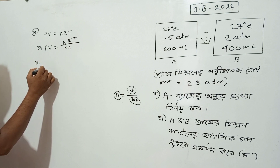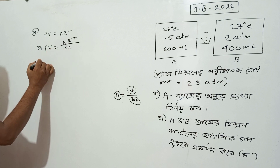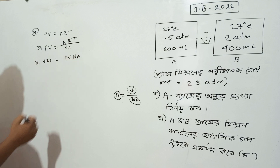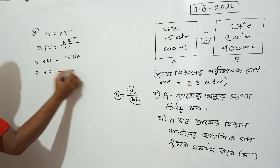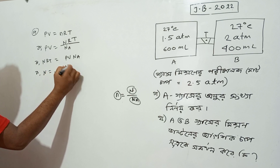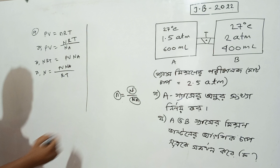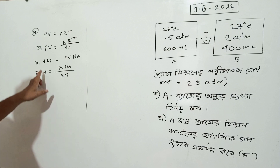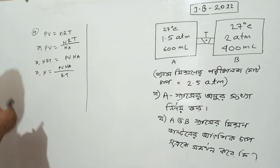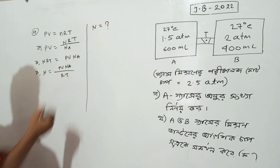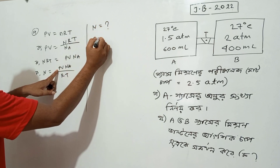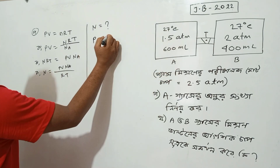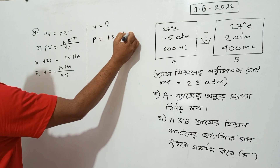Now we will see that nRT is equal to PV, and n is equal to PV divided by RT. We should use the given pressure — this is the pressure, so we put the pressure on P. This is 1.5 atm.